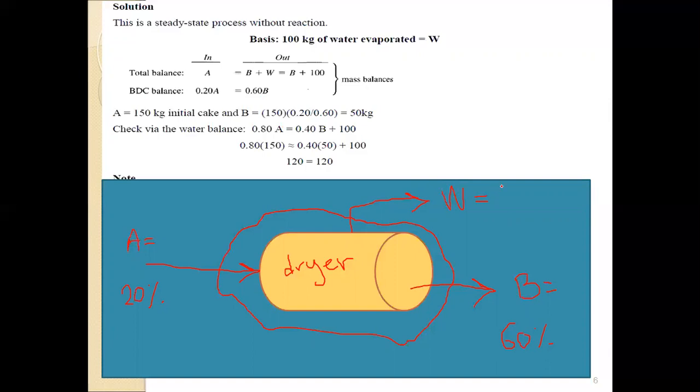Why? Because you can omit or neglect the amount of water, since water does not contain any solid material. This is purely 100% water, 100 kilograms of water. So you can use bone dry cake balance to obtain a simple equation.